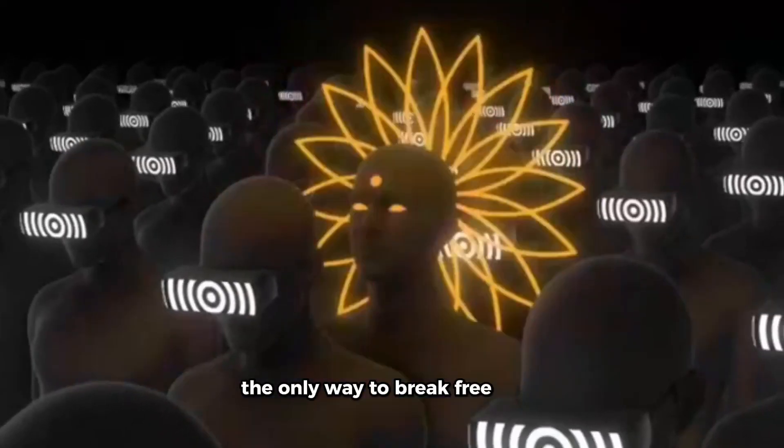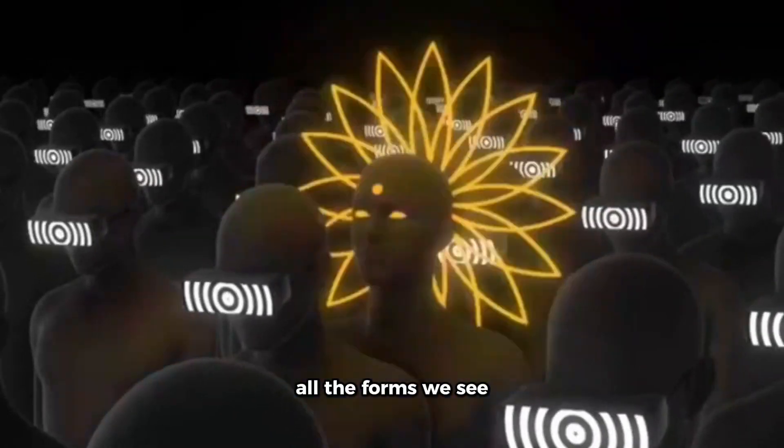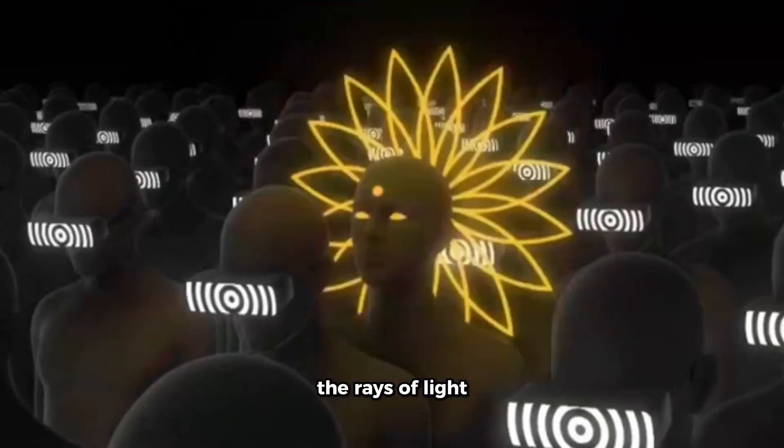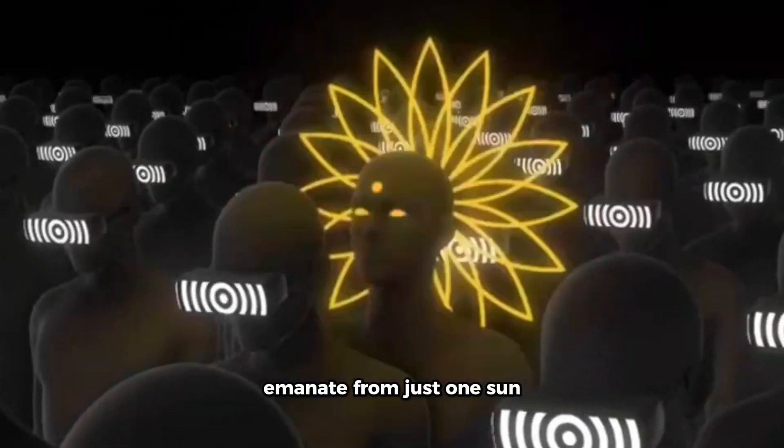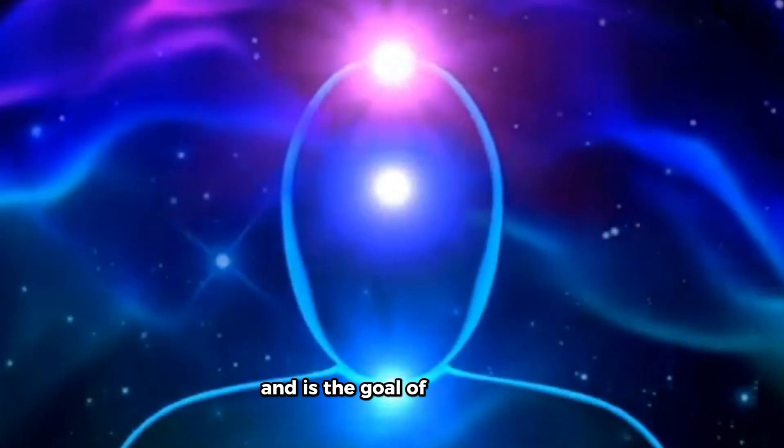The only way to break free from the spell of the enchantress is to realize that all the forms we see are aspects of that one reality, just as all the rays of light emanate from just one sun. This is known as moksha or liberation and is the goal of Hinduism.